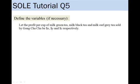So first of all, Goldfish probably will define the variables as what we are going to do now. Let the profit per cup of milk green tea, milk black tea and milk earl grey tea sold by Gong Cha Cha be x dollars, y dollars and z dollars respectively.